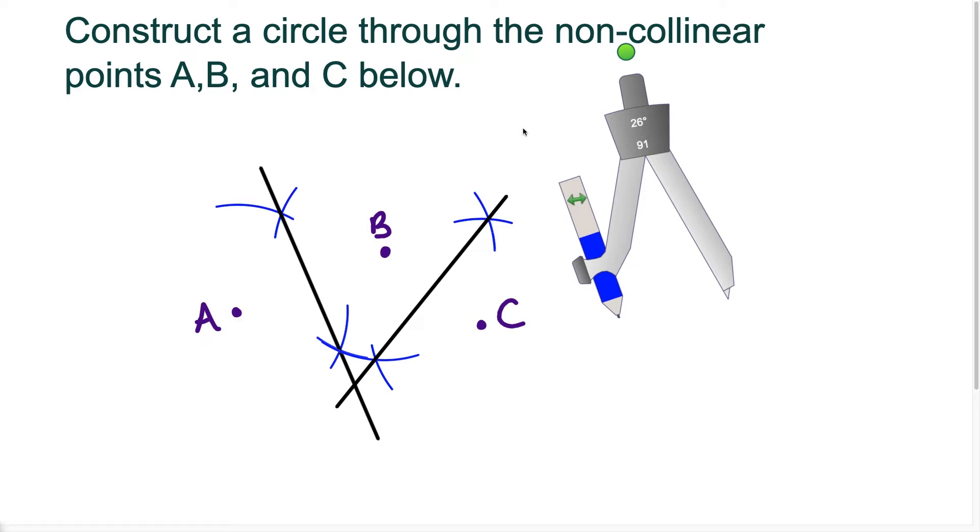So now here, notice the two perpendicular bisectors intersect all the way down here. And if I call this circle O, this represents the center of circle O.